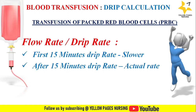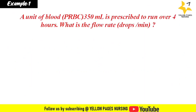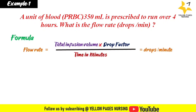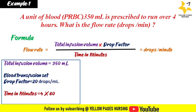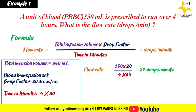Example 1: A unit of blood PRBC 350 ml is prescribed to run over four hours. What is the flow rate in drops per minute? The formula is: flow rate = total infusion volume × drop factor ÷ time in minutes. Here, total volume is 350 ml, drop factor is 20 drops per ml, and time is 4 × 60 minutes. Applying the formula gives an answer of 29 drops per minute.